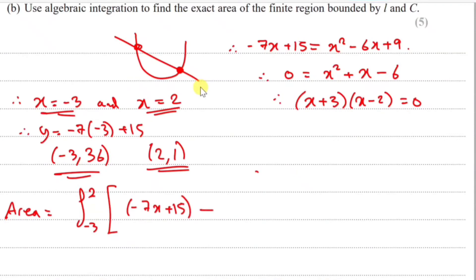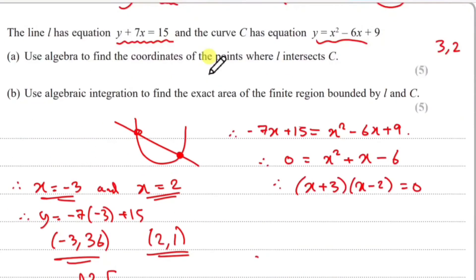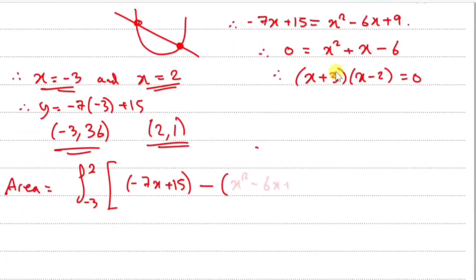Then we subtract the other y equation: x² - 6x + 9. And then dx, with respect to x.